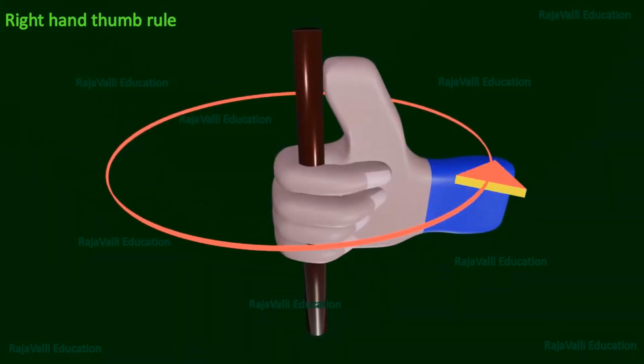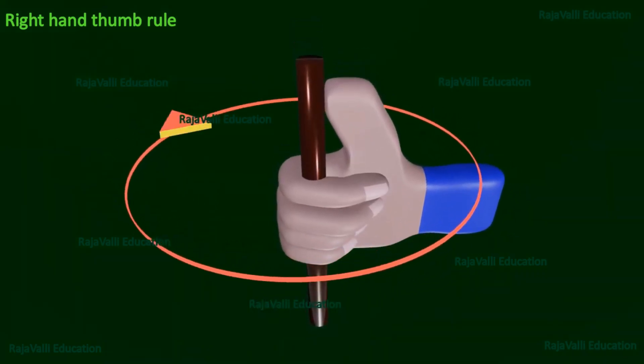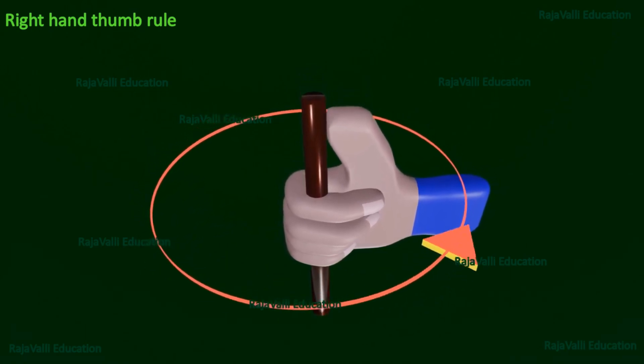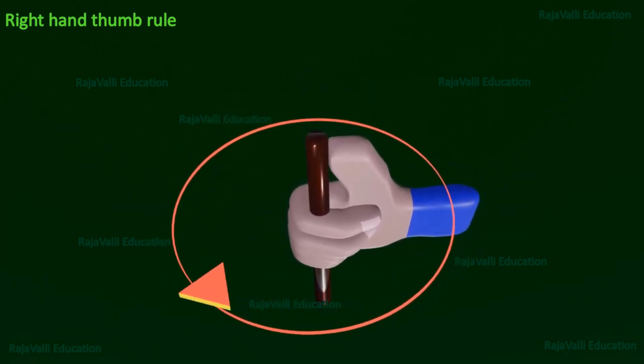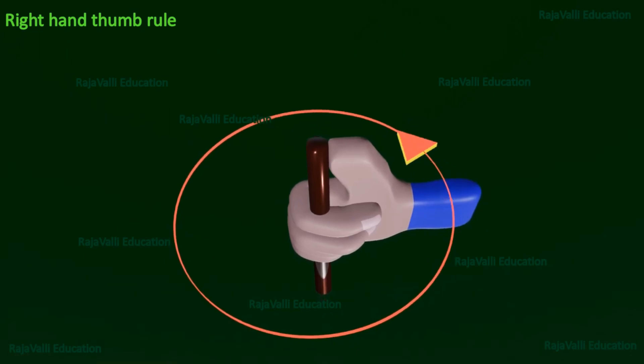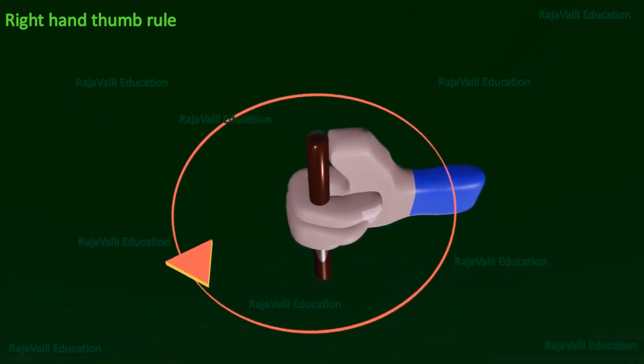If the current flows in the direction of the thumb, that is in upward direction, then the magnetic field lines will move in anticlockwise direction like the other fingers holding the conductor.